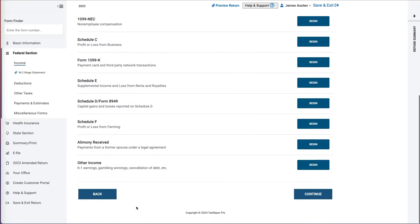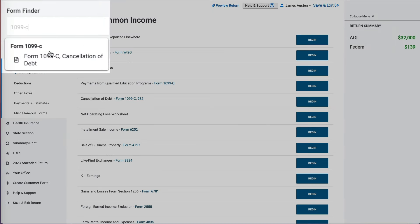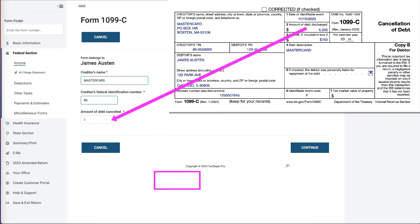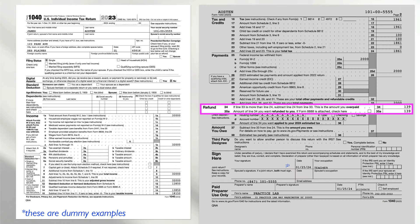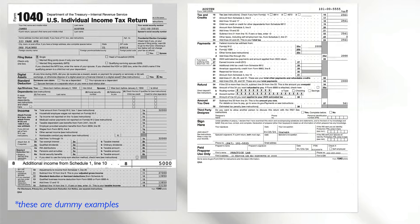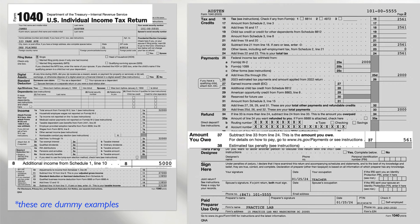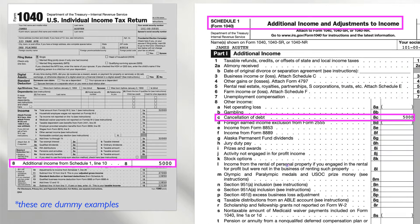I'm using TaxSlayer for this example, but you can use any other software. You would have to find under income or search for Tax Form 1099-C in the software, then enter all the information listed on the form. Initially when I ran the return, James would receive a small $139 refund. But after adding the additional $5,000 in income, on which he didn't have any withholdings, he would now owe the federal government $561. The additional income is listed on Schedule 1, Part 1, and flows through to Form 1040.